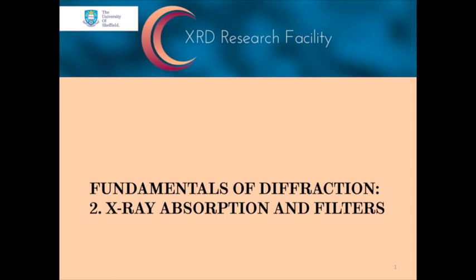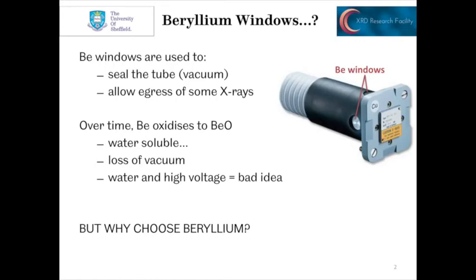In this short video, we're going to be discussing X-ray absorption and how we can use this in creating filters to improve the quality of the radiation in our different optometers. In the first video about generating radiation, we talked about sealed X-ray tubes and how they have beryllium windows. These beryllium windows act to seal the vacuum inside the tube and also to allow the escape of some X-rays so that we can use them in our experiments.